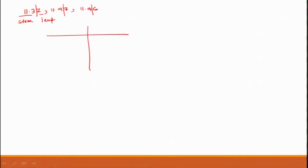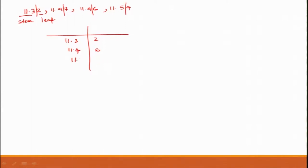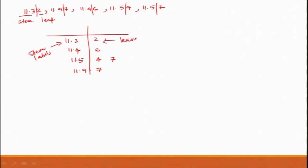So for example with values 11.32, 11.46, and 11.97: stem 11.3 gets leaf 2, stem 11.4 gets leaf 6, stem 11.9 gets leaf 7. If a new value 11.54 arrives, you add stem 11.5 with leaf 4. And if 11.57 arrives, leaf 7 is added to stem 11.5. In a system where data is continuously coming in, you can use this mechanism to display data without losing much information.